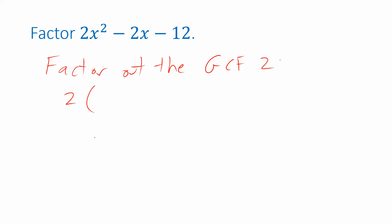If I factor that 2 out, it leaves x squared on the first term, minus x on the second term, and minus 6 on the third term. The quantity in parentheses is now a monic trinomial, and those are usually easier to factor.